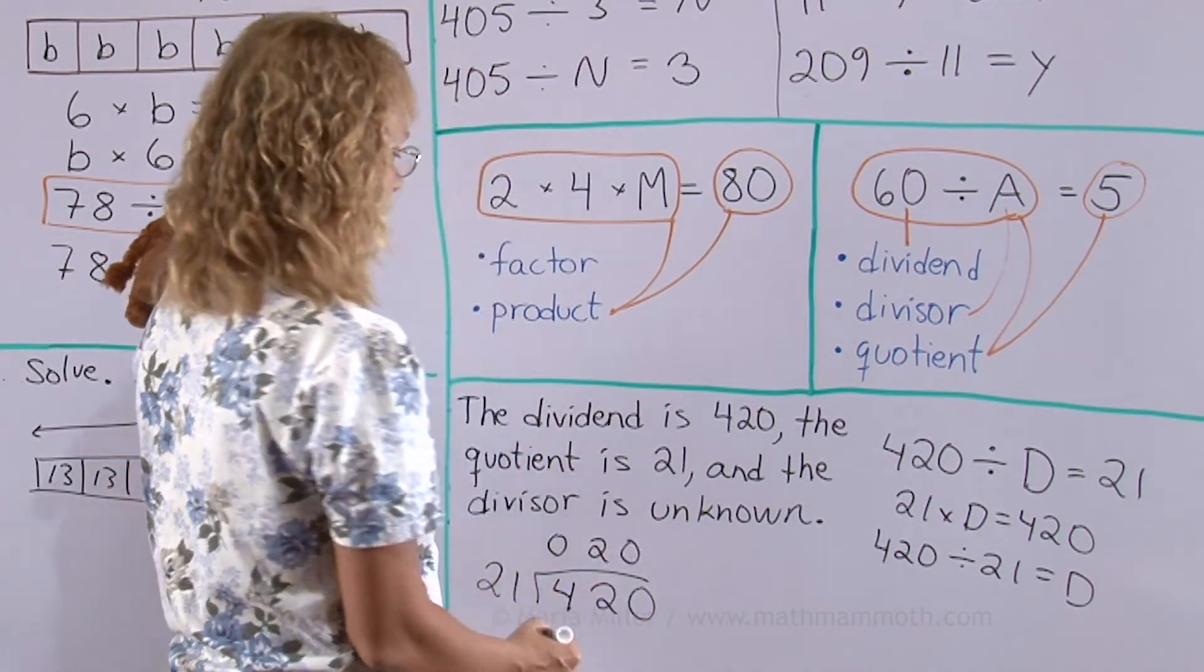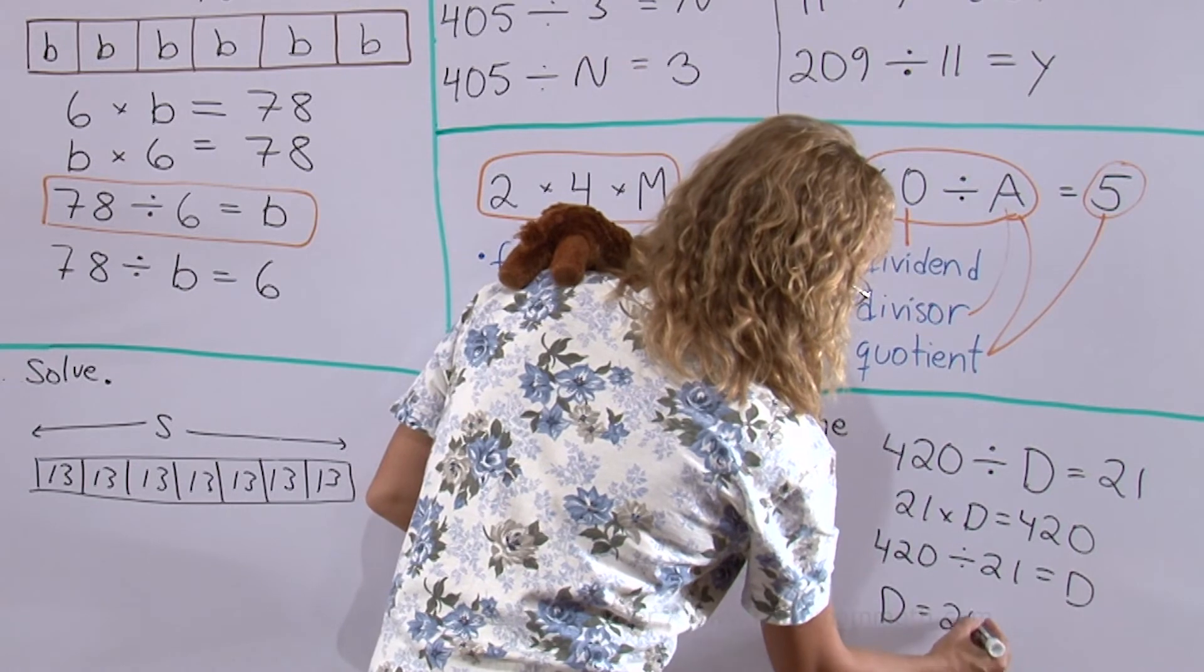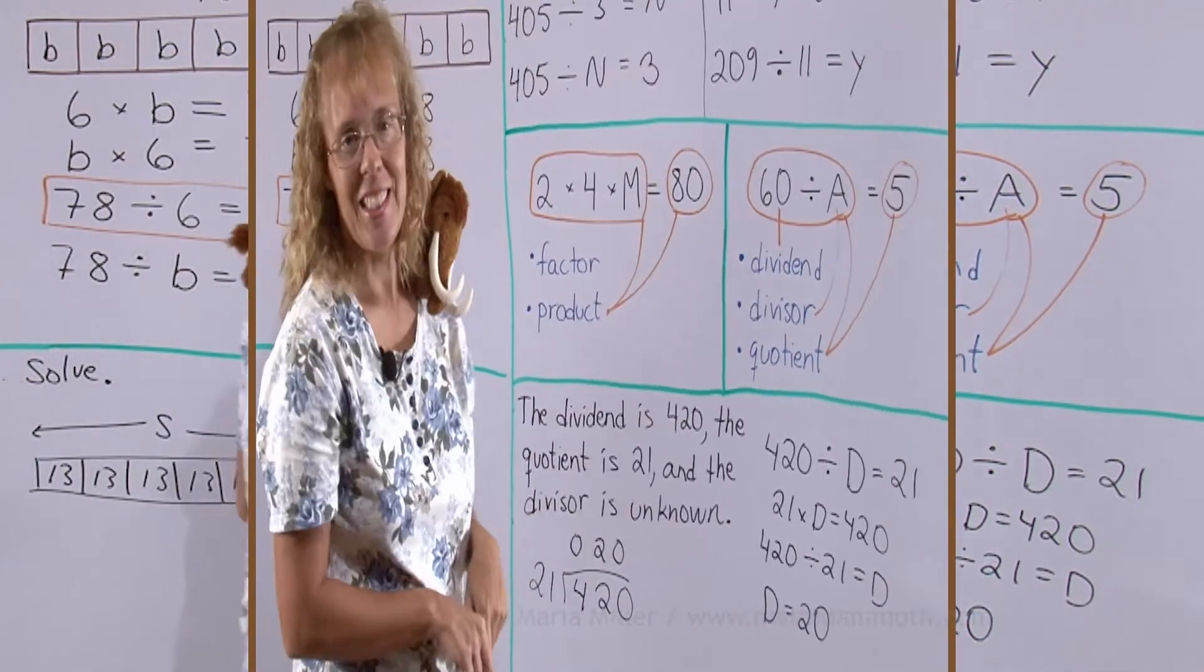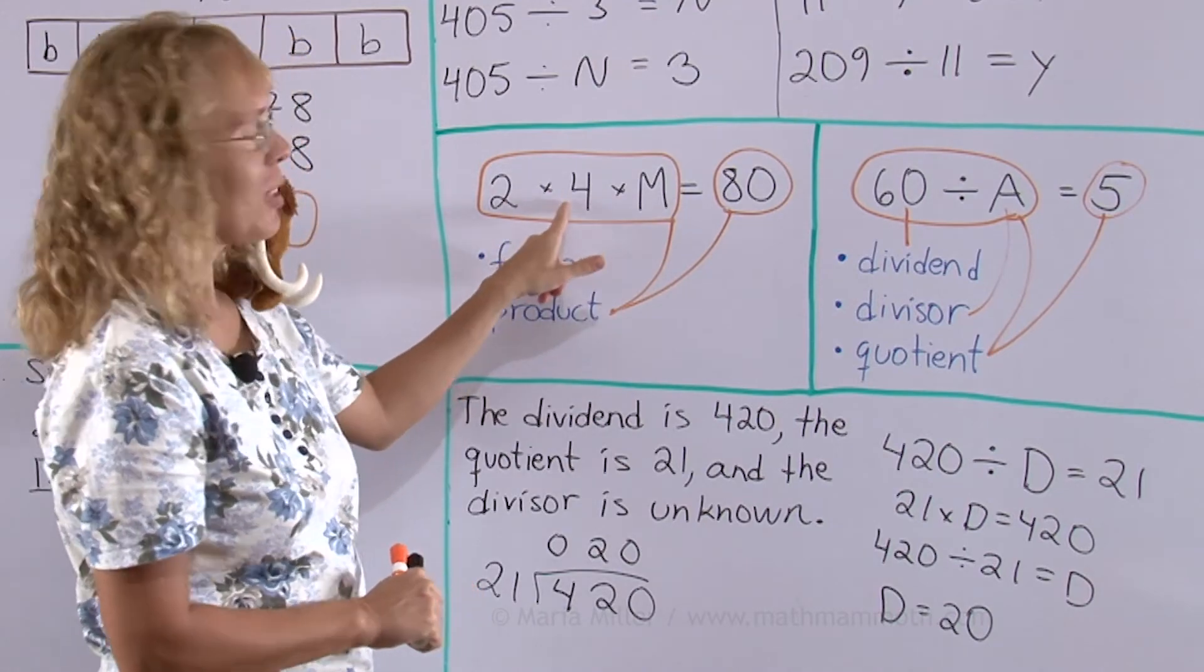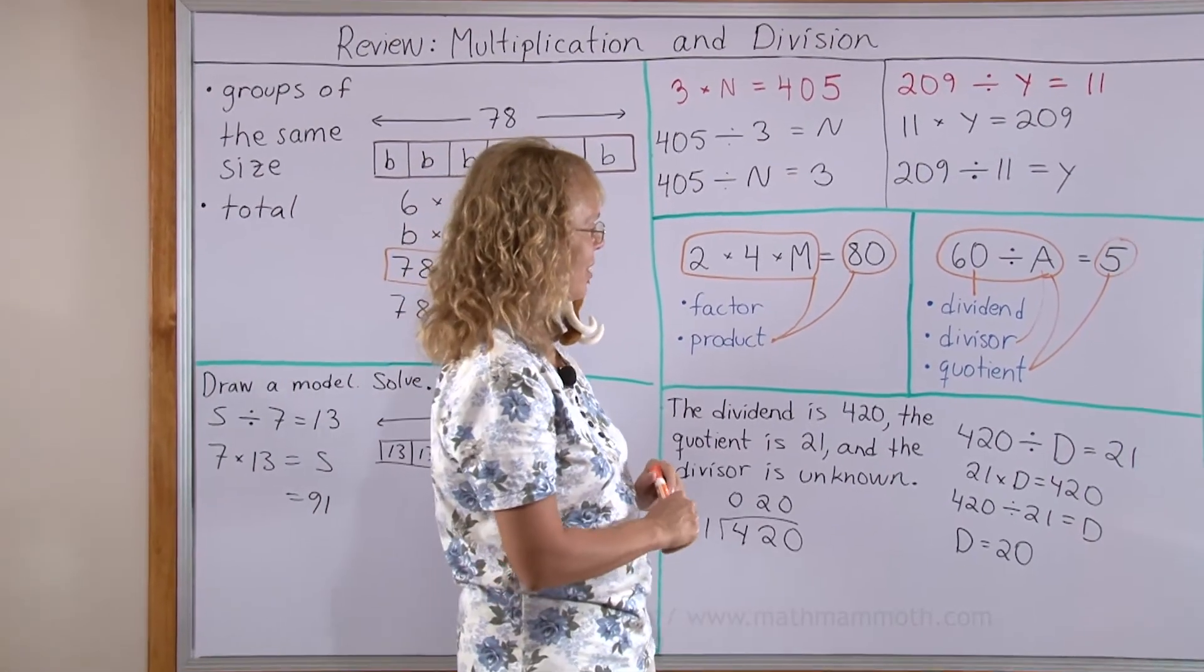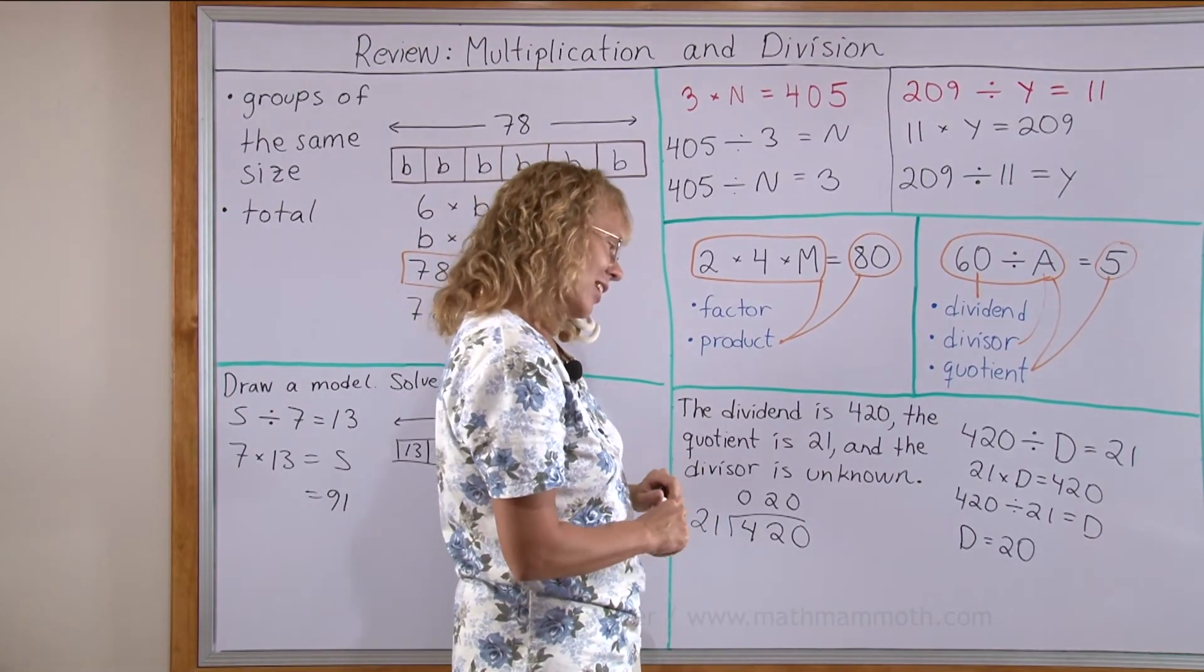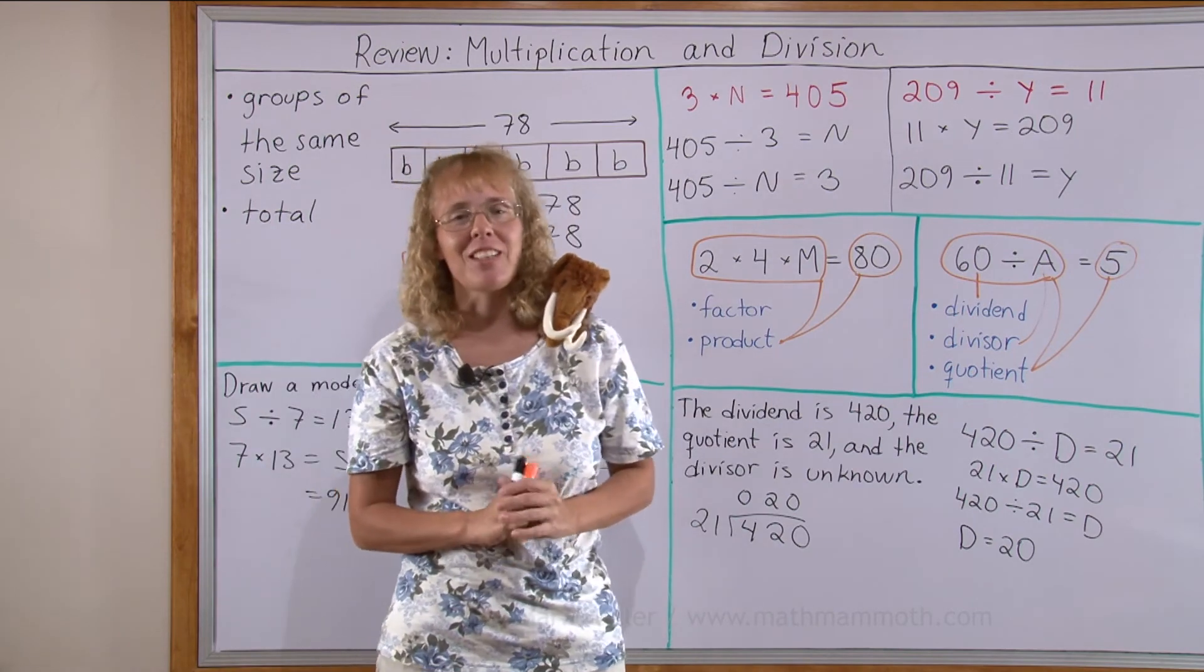420 divided by 21, let's try long division. 21 goes into 4, 0 times. 21 goes into 42 exactly two times and we're done, so D is 20. And in case you didn't get to solve what M is here, 2 times 4 is 8 so 8 times 10 equals 80. Matthew's age 10 months, you think so Matthew? I don't know, maybe he was really made 10 months ago in the factory.